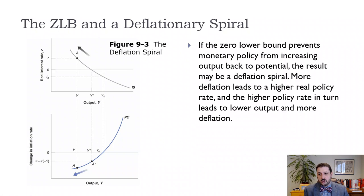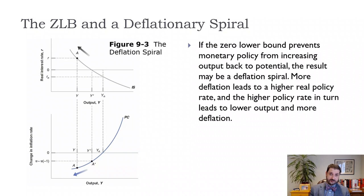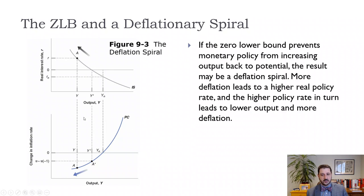The other danger is a zero lower bound in a deflationary spiral. If the zero lower bound prevents our monetary policy from getting us back to the natural rate, what can happen is that deflation — meaning a negative inflation rate — leads to a higher real interest rate, because the real interest rate is the nominal interest rate minus inflation. When inflation is negative, that adds to the real interest rate instead of subtracting from it. A higher real interest rate means we're moving up and to the left on the IS curve, because investment is more expensive, so we invest less, build fewer houses, and we end up with lower and lower output, forced below the natural level.